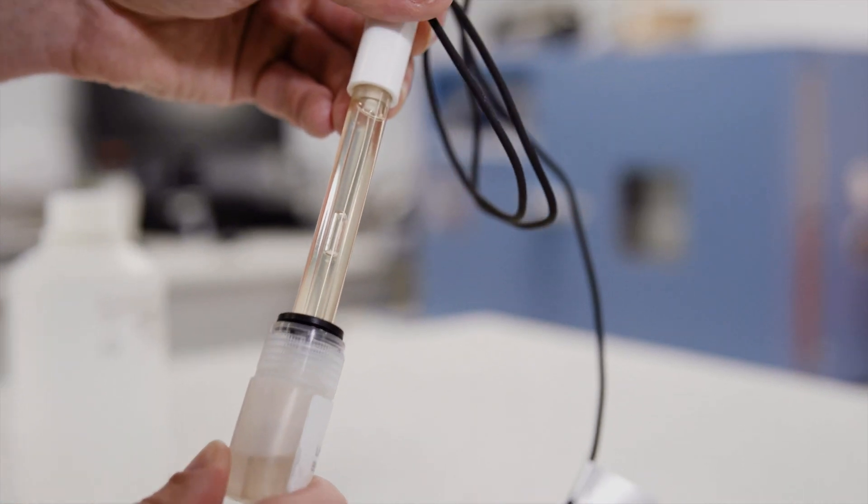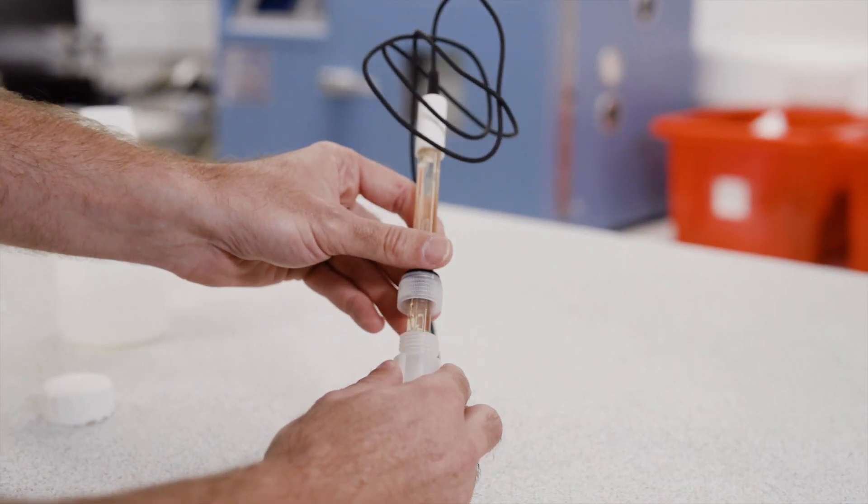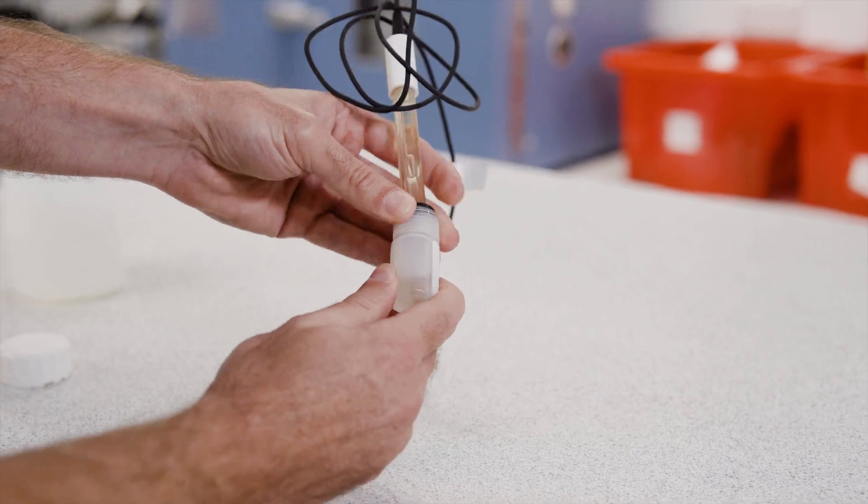Handle your pH meter and electrode with care. The electrode's glass membrane is fragile and can be easily damaged. Additionally, never force the electrode into a sample. Instead, gently immerse it to prevent damage.